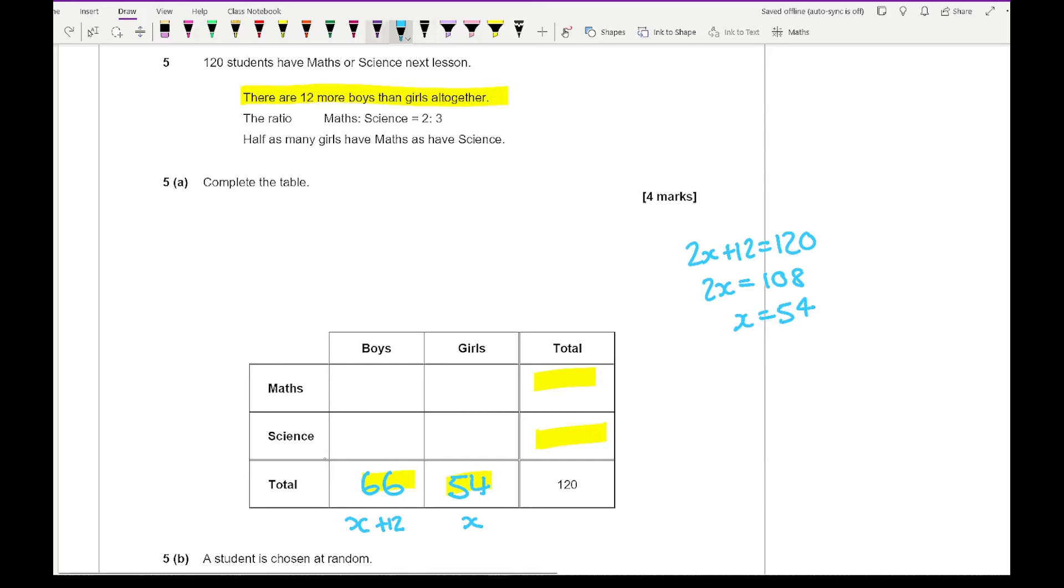Now we also know that the ratio of maths to science is 2 to 3. So here what I'll do is I'll want to share 120 in the ratio of 2 to 3. Now 2 plus 3 is 5. So 120 divided by 5 is 24. So if I do 2 times 24, and then 3 times 24, I'm going to get 48. I don't know where that 240 has come from, so let's get rid of that. I'm going to get 48, and 3 times 24 is going to be 72.